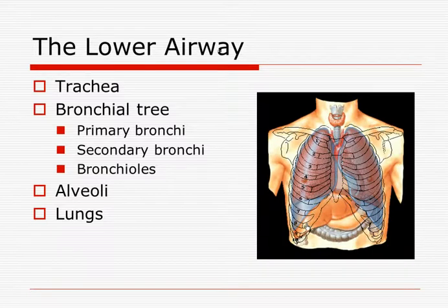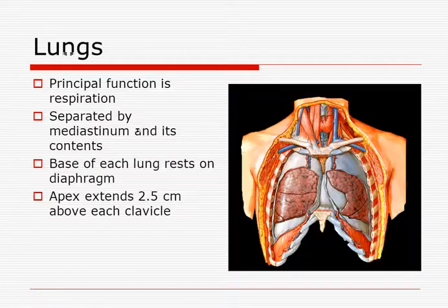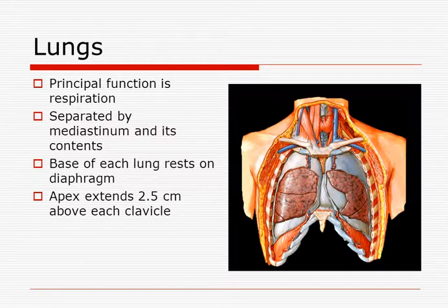For the lower airway, we have the trachea, the bronchial tree, primary bronchi, secondary bronchi, bronchioles, the alveoli, and the lungs themselves. The lungs are separated by the mediastinum. The base of each lung rests on the diaphragm, and the apex extends about two and a half centimeters above each clavicle. That's why we have to be careful with clavicular fractures — bone fragments can actually puncture a lung or cause a pneumothorax.